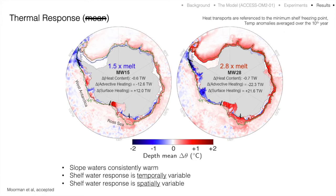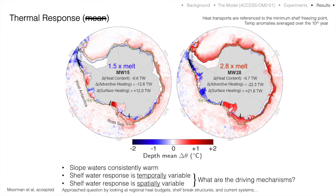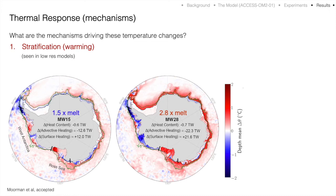Looking at the depth-average temperature anomaly over the final year of the experiments, we can see regions of extreme heating, extreme cooling, and some variations between the smaller and larger perturbation experiments. We wanted to dig into this and determine the driving mechanisms for both the sign and strength of the temperature response in different stretches of the continental shelf. We approached this by looking at regional heat budgets, analyzing shelf break regimes dominating the dynamics in different regions, and looking at different current systems. This yielded three mechanisms driving the thermal response on the continental shelf.